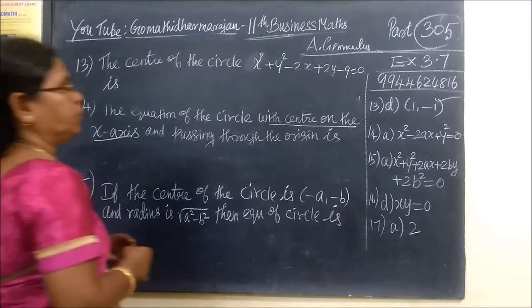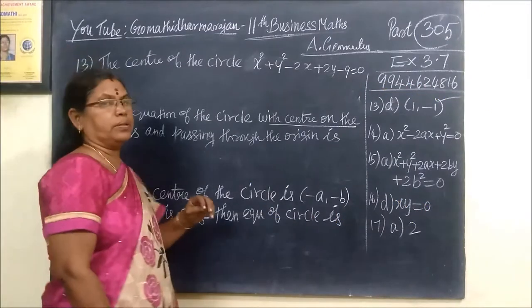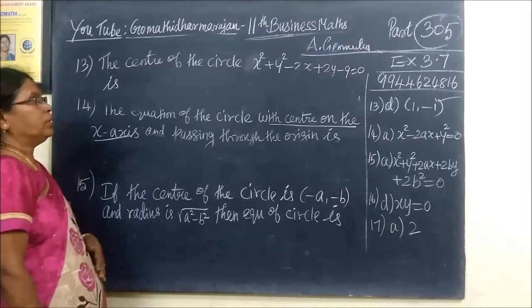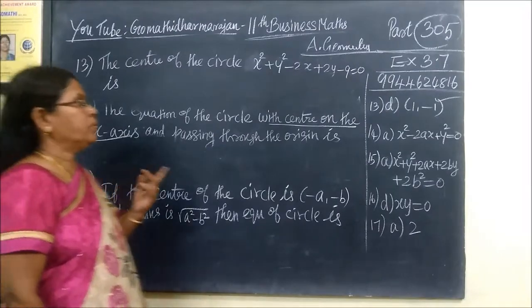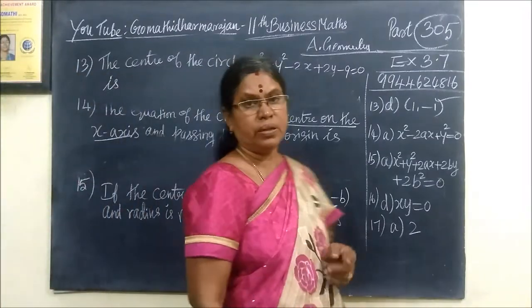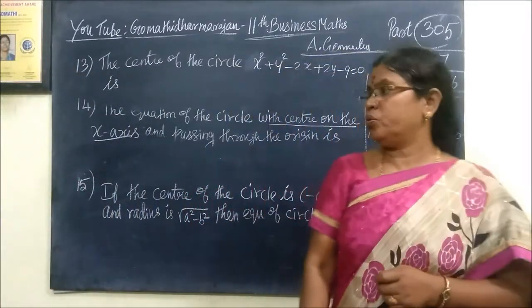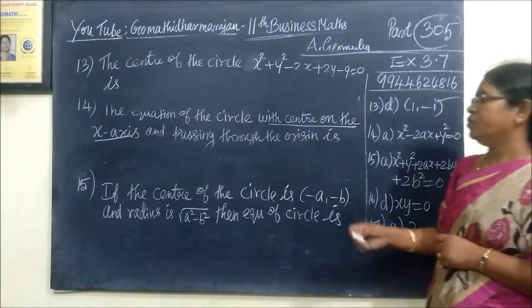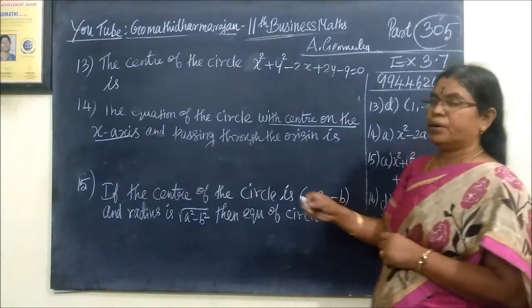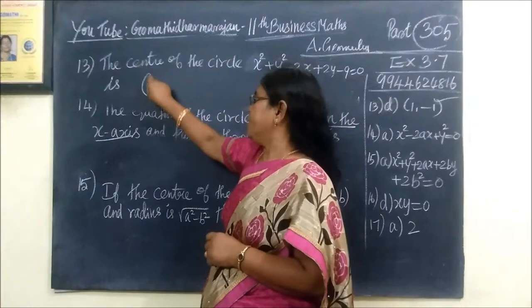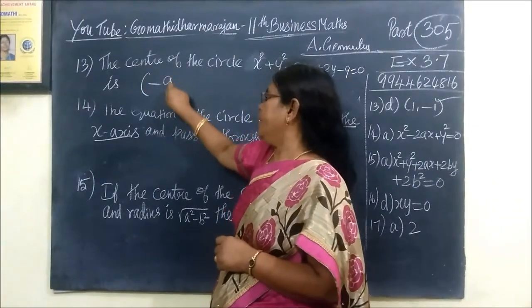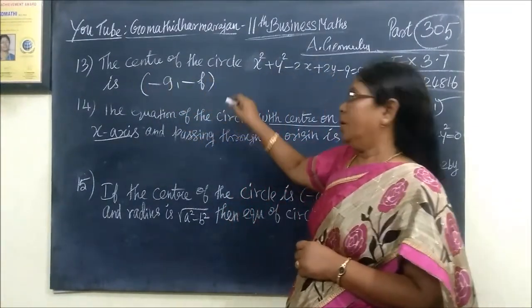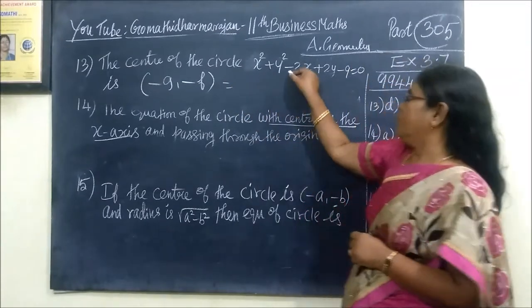Question number 13. The center of the circle x² + y² - 2x + 2y - 9 = 0. The center point formula is (-g, -f).